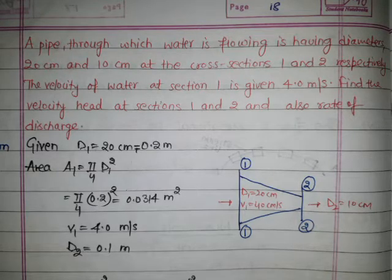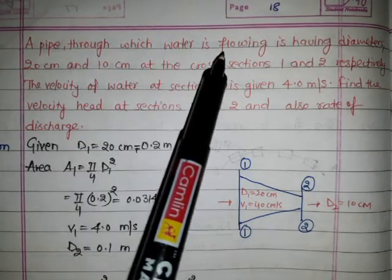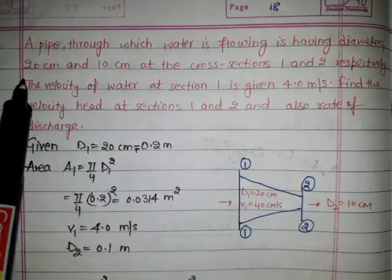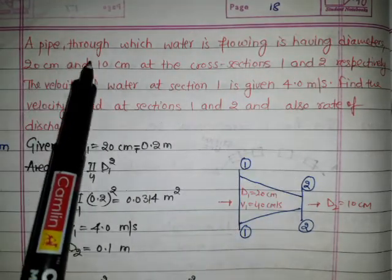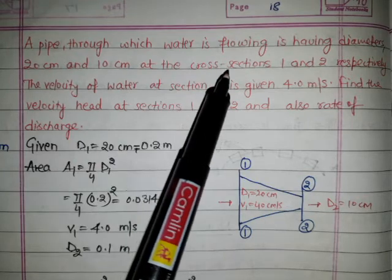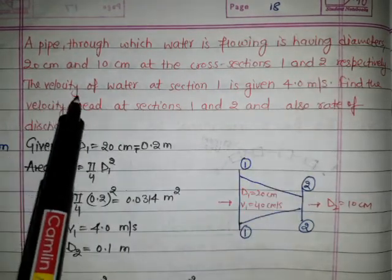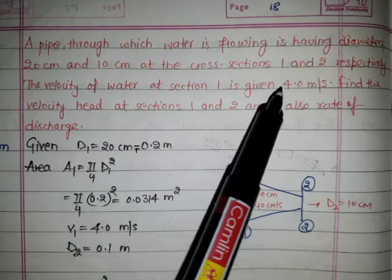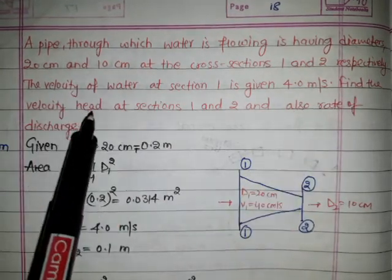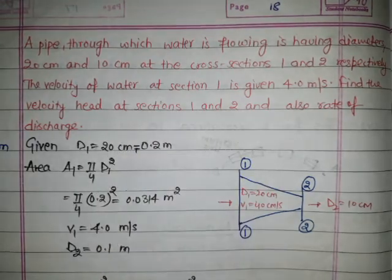The problem statement: a pipe through which water is flowing has diameters of 20 centimeter and 10 centimeter at cross-sections 1 and 2 respectively. The velocity of water at section 1 is given as 4 meter per second. Find the velocity head at sections 1 and 2, and also the rate of discharge.